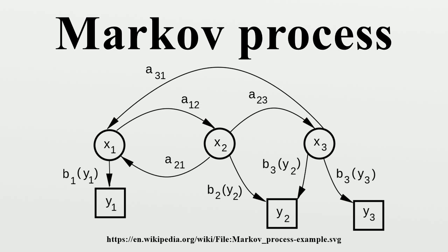Markov property: The general case. Let there be a probability space with a filtration, for some index set, and let there be a measure space. An S-valued stochastic process adapted to the filtration is said to possess the Markov property with respect to the filtration if for each and each with S less than T.